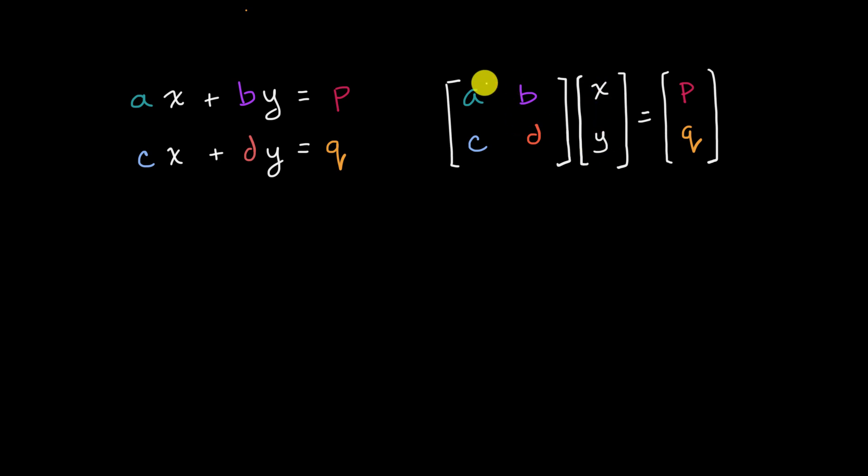And then we know when we either think about it as a transformation on this unknown vector, we get this known vector, we get the vector p, q, or you could think about it as matrix multiplication. When you multiply this vector by this matrix, you get this p, q vector.